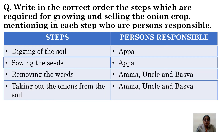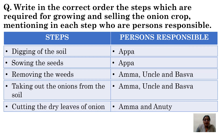Next step is taking out the onions from the soil. When their crop was fully ready, the onions were taken out by Amma, Uncle, and Baswa. After that, cutting the dried leaves of the onions — once the crop came home, the dried leaves of the onions were cut by Amma and Aunty.